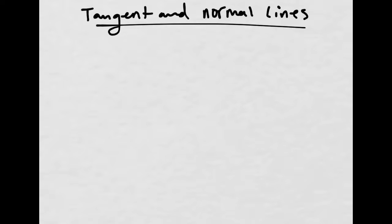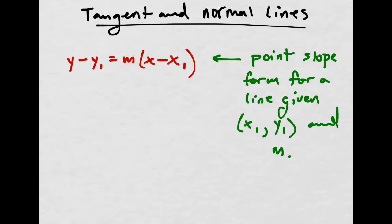So we already know how to find an equation of a line that is tangent to a function at a certain x value. That's fairly simple to do as long as you remember a couple of things. This is the point slope form for a line. If you're given or you can figure out an x1 and a y1 and you can figure out the slope, then all you have to do is plug those three things in and you'll get an equation for some line with that slope going through that point.